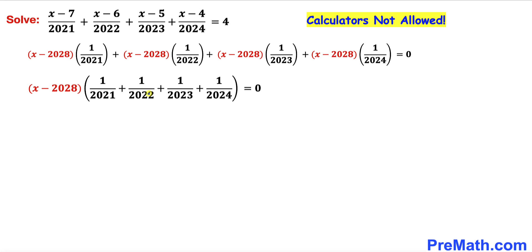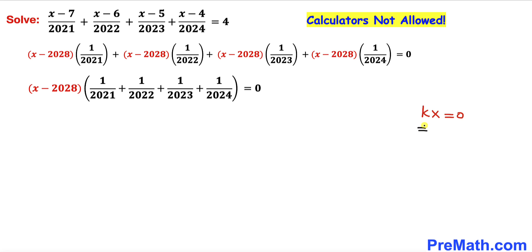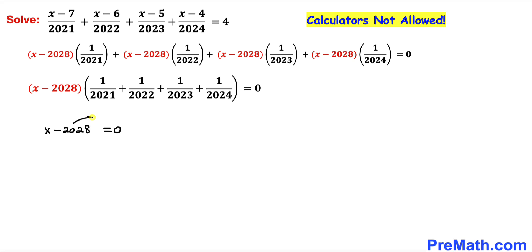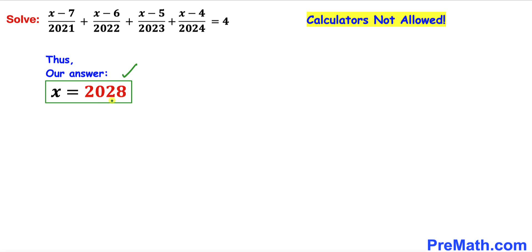Now we observe that (x minus 2028) is common across all terms on the left-hand side, so we can factor it out: (x minus 2028) times (1 over 2021 plus 1 over 2022 plus 1 over 2023 plus 1 over 2024) equals 0. The bracketed sum is a nonzero constant, so by the zero-product property, x minus 2028 equals 0, giving us x equals 2028. Thanks for watching — please don't forget to subscribe to my channel for more exciting videos!